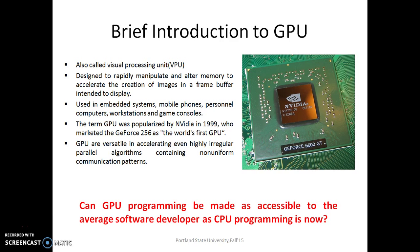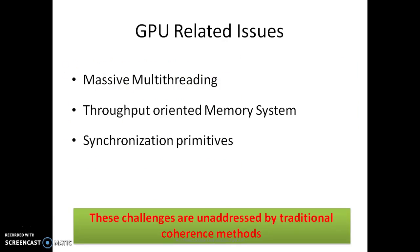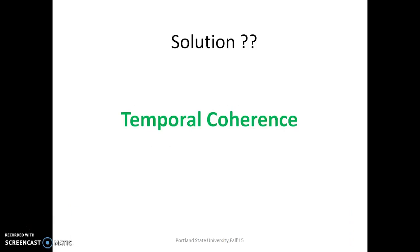The key differences between GPU and CPU architecture are multi-threading, throughput-oriented memory systems, and synchronization primitives. All these challenges are unaddressable by traditional coherence methods, as they stem from the introduction of coherence messages on a GPU. The solution to this problem is temporal coherence.